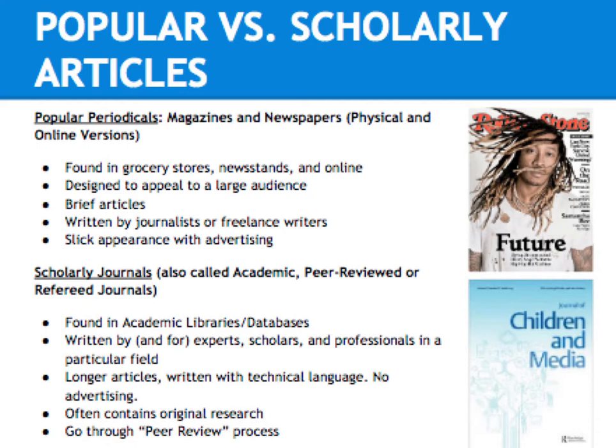I will go over some differences between popular and scholarly sources. Popular sources include magazines, newspapers, and most dot-com websites. They are easily accessible online or at grocery stores or newsstands. The articles are typically written to appeal to a large audience, are usually brief, and often written by journalists or freelance writers. These sources also have a slick appearance and contain advertising. Rolling Stone Magazine is an example of a popular periodical.